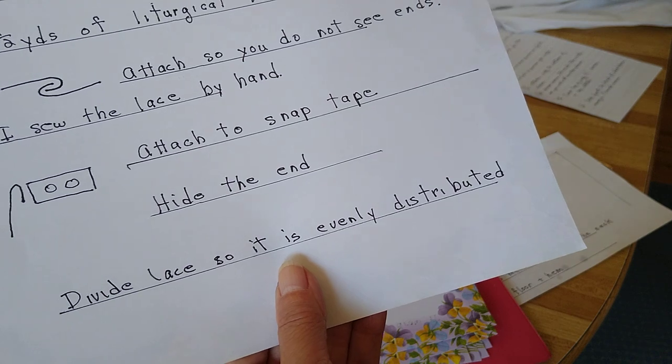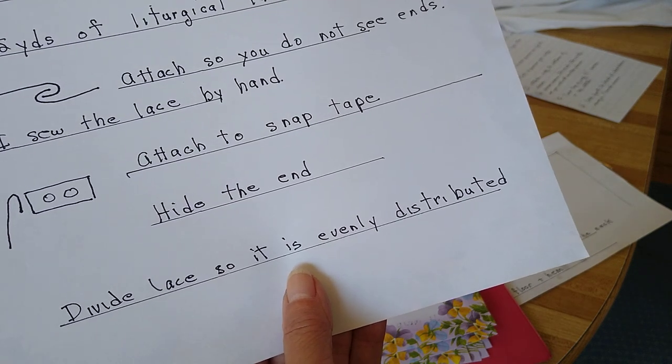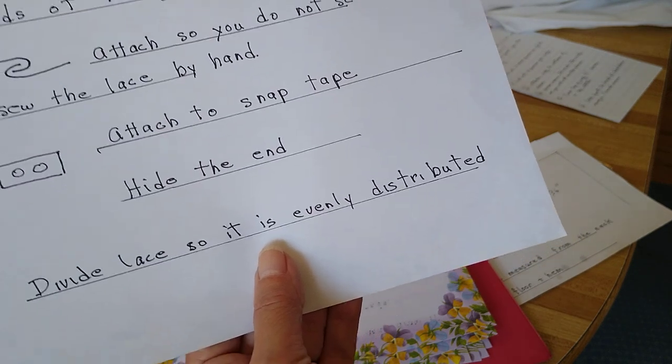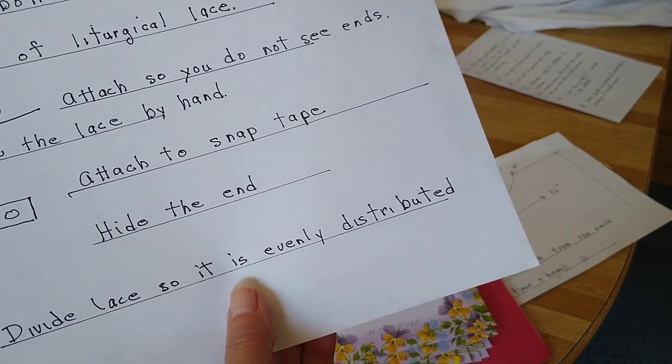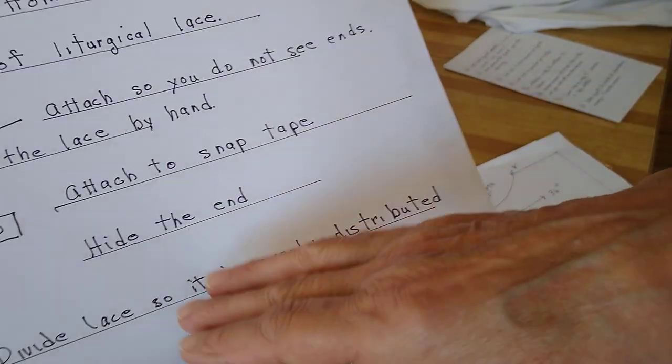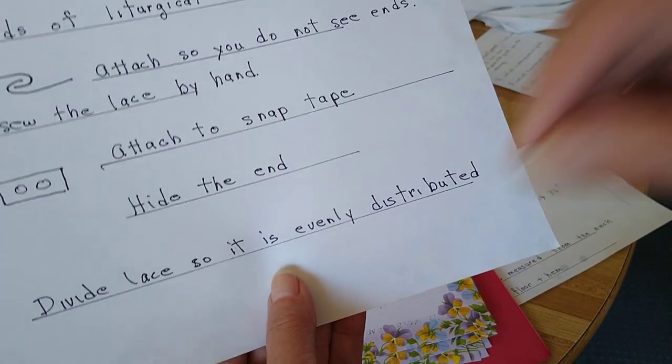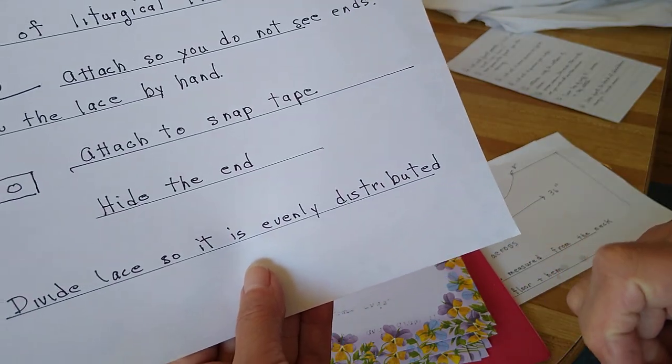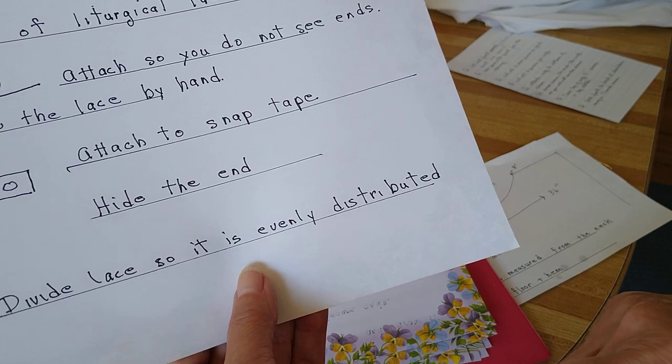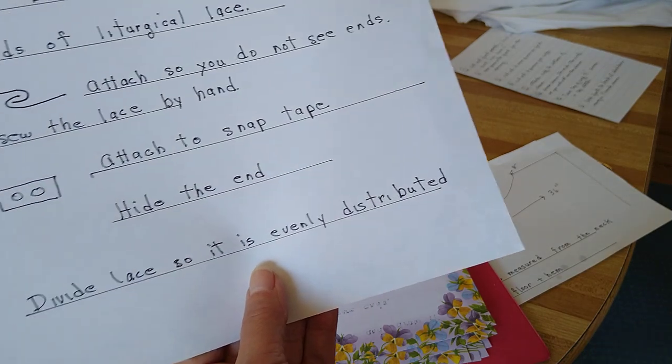I do the same thing, divide the lace evenly among the tape for the snaps. Make sure you pre-wash that tape. There is another video which I'll show you how to attach that tape onto the fabric for the top. Good luck and good sewing.